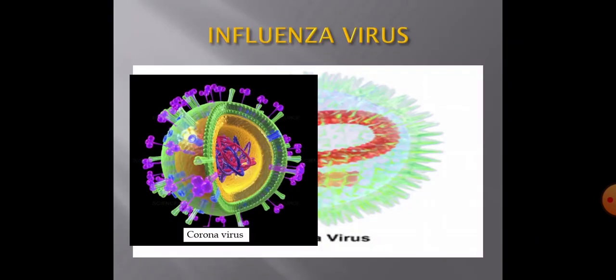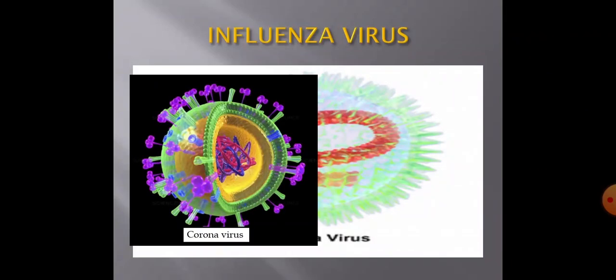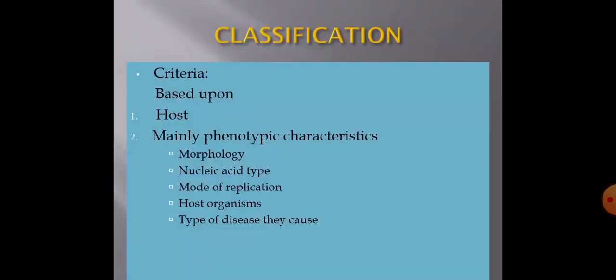Next is the influenza virus. It has three types: A, B, and C. It is an enveloped virus with spikes as well as a capsid. The shape of the coronavirus is also shown here — it is also a type of flu virus. Inside you find the core, which is an RNA genome. Influenza virus causes flu in its host.